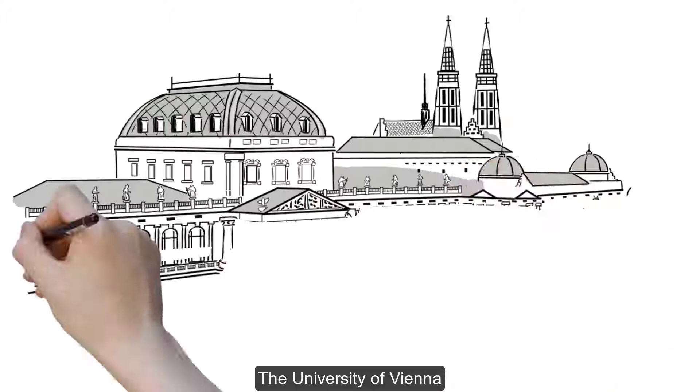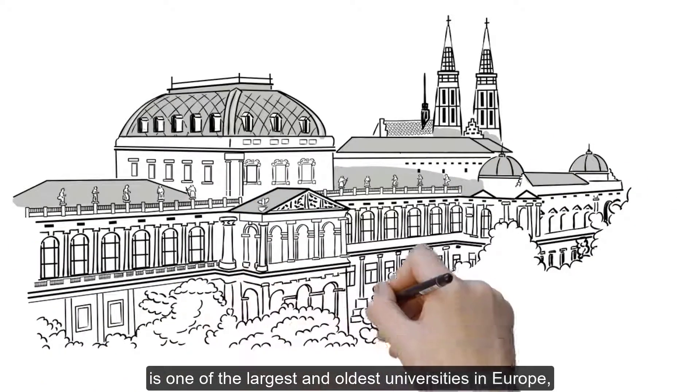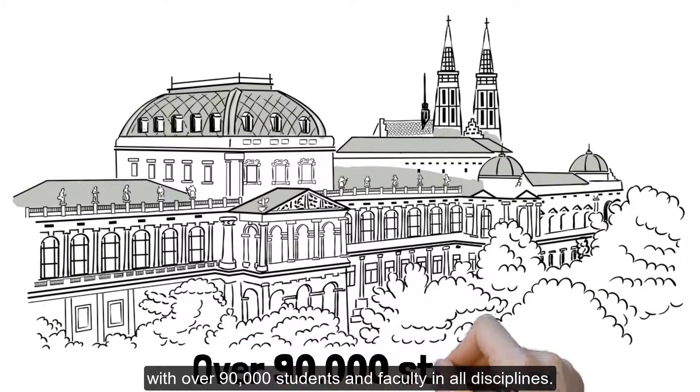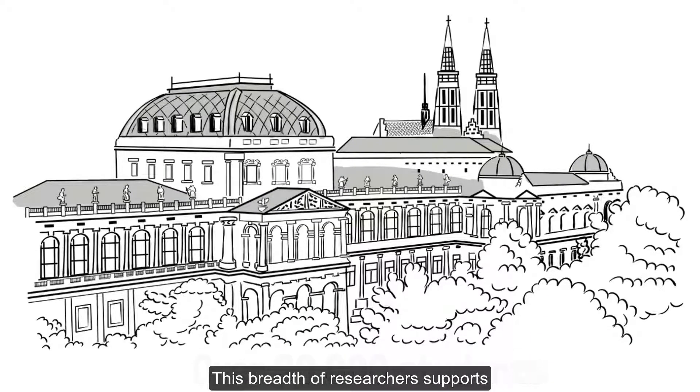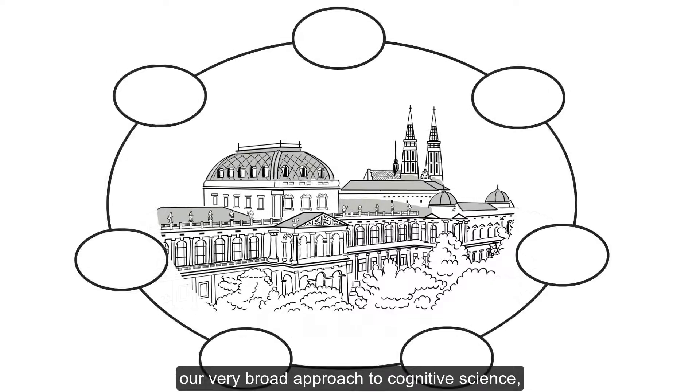The University of Vienna is one of the largest and oldest universities in Europe, with over 90,000 students and faculty in all disciplines. This breadth of researchers supports our very broad approach to cognitive science.